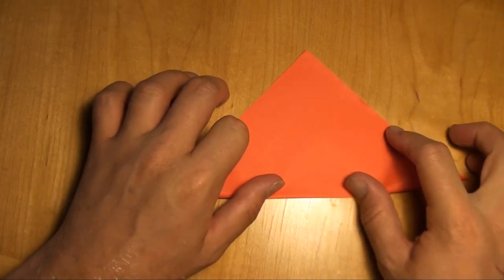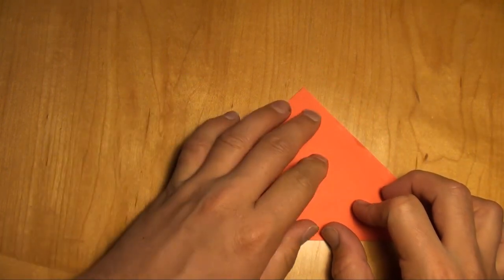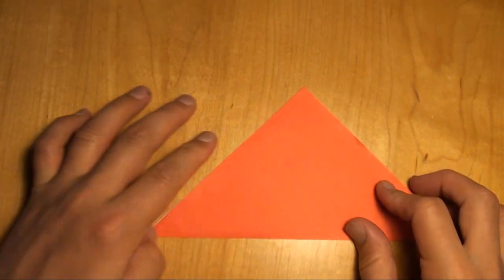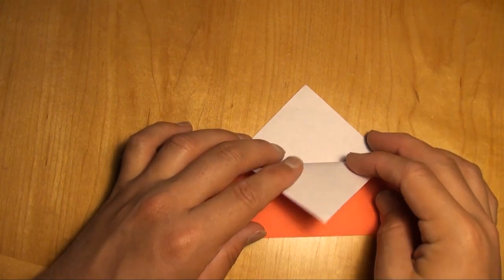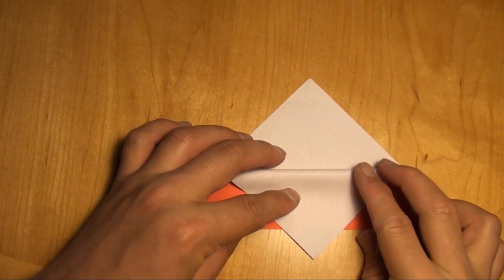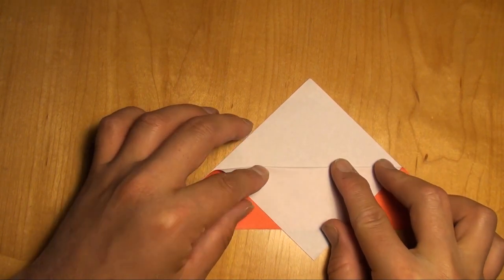This is one of my favorite models to teach at birthday parties because it's so simple. And it is an action model. So we fold it in half. Now we're going to take this top corner and fold it down so that the corner goes almost an inch below the bottom edge.